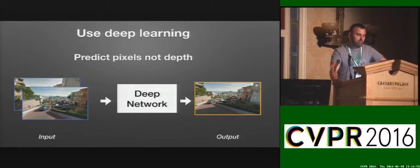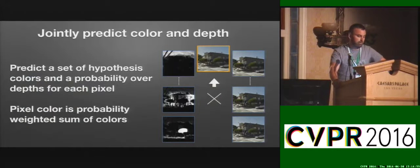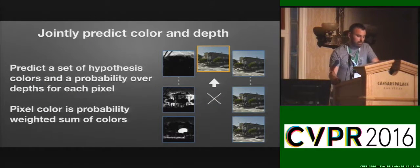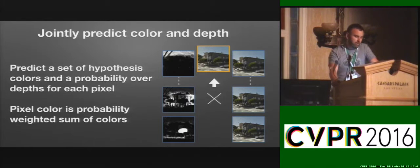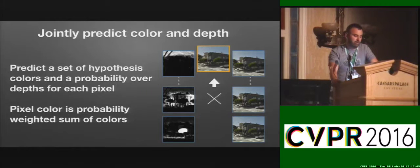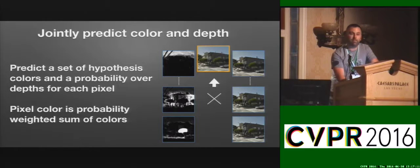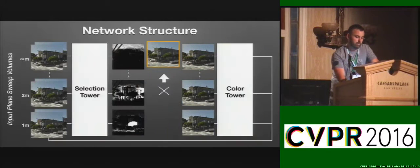During training, we leave one image out and then train our network to reproduce the held-out images from the others. Our second key idea is to jointly predict a distribution over depth and a set of corresponding hypothesis colors. The final color for each pixel is computed as a probability-weighted sum of the hypothesis colors. This formulation can be optimized end-to-end within a deep learning framework.